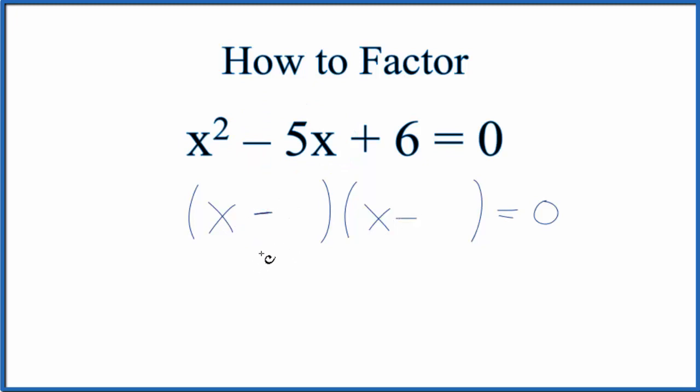Now we're looking at the 6 here. We want to know what factors of 6 will add up to this negative 5 here. So we could have 1 times 6, or we could have 3 times 2.